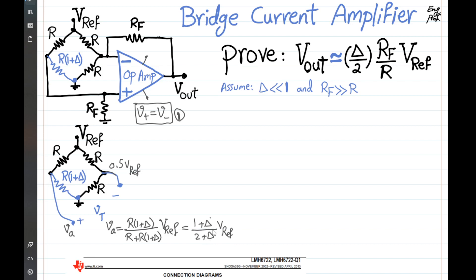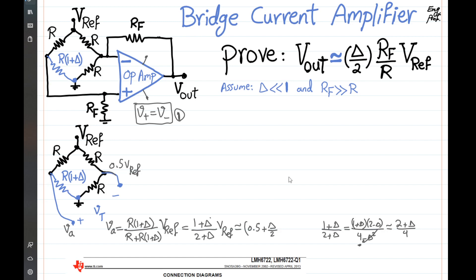Now (1 + delta)/(2 + delta) can be simplified. Multiplying numerator and denominator by (2 − delta) gives (1 + delta)(2 − delta)/(4 − delta²). Since delta² ≈ 0, this becomes (2 + delta)/4, which is approximately 0.5 + delta/4. So VA ≈ (0.5 + delta/4)·V-ref.